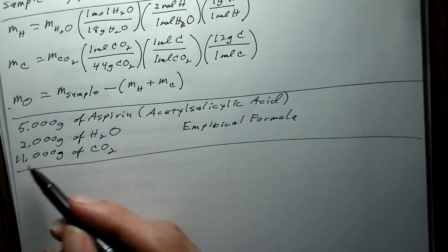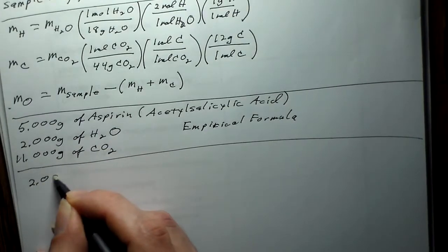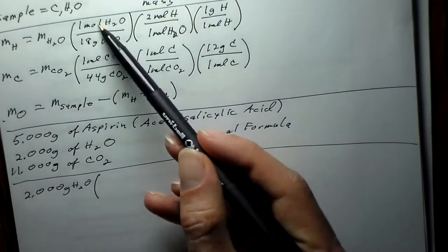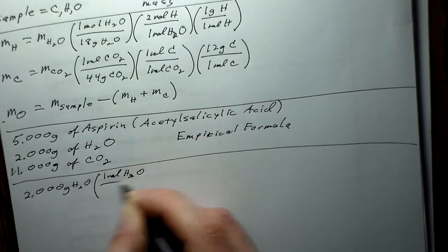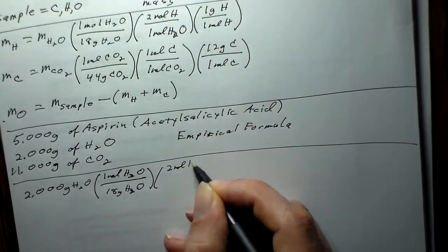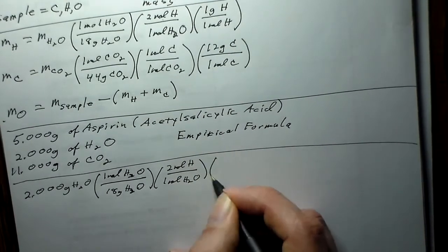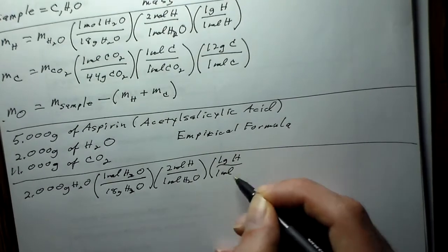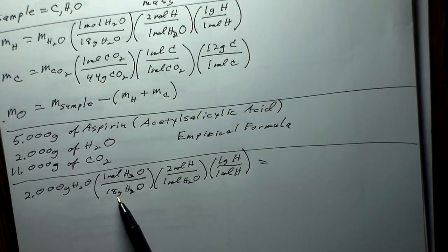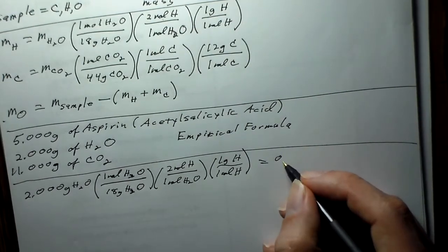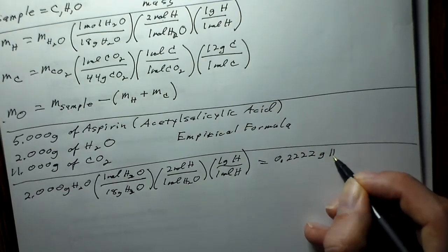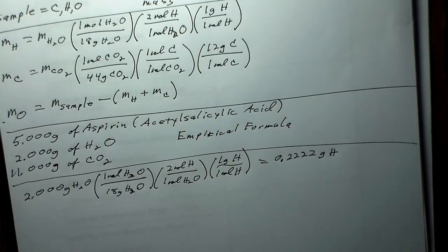First we'll work with the water. We have 2.000 grams of H₂O, times one mole of H₂O per 18 grams, times two moles of H per mole of H₂O, times one gram of H per mole of H. Running this through: 2 times 2 over 18 equals two-ninths, which is 0.222 grams of hydrogen. So this is how many grams of hydrogen were in our original sample.